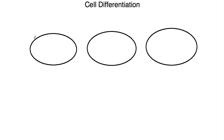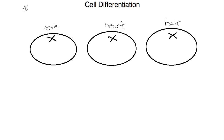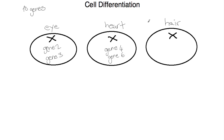If we take three different cells from the same organism — an eye cell, a heart cell, and a hair cell — each cell will contain all the genes of that organism. Let's say this organism had ten genes; each one of these cells would have those ten genes. What is important, though, is that not all of these genes will be activated. In our first cell, gene 2 and gene 3 are activated. In our second cell, gene 4 and gene 6 are activated. And in our last cell, gene 1 and gene 5 are activated.